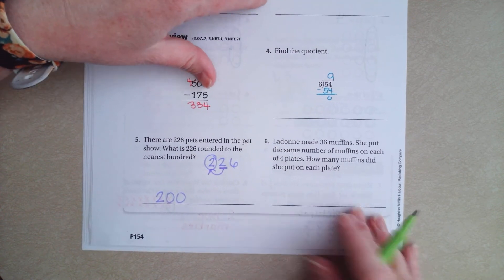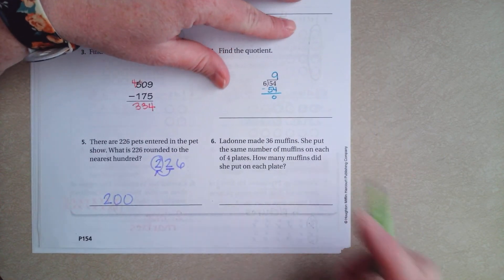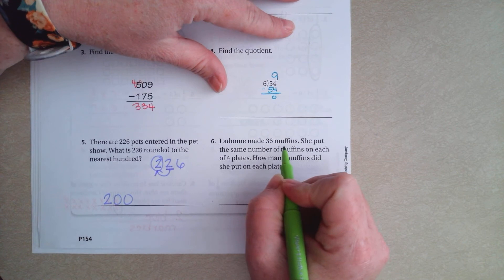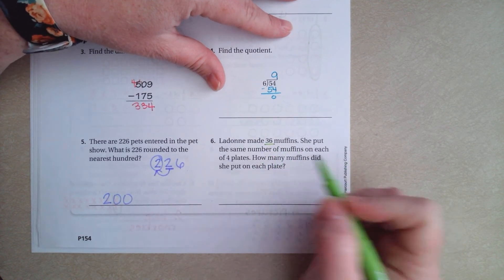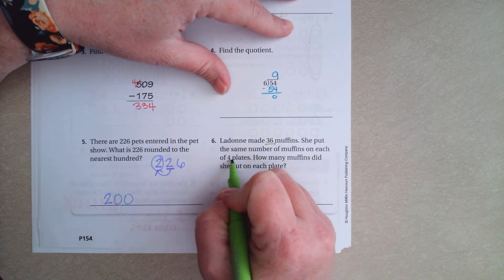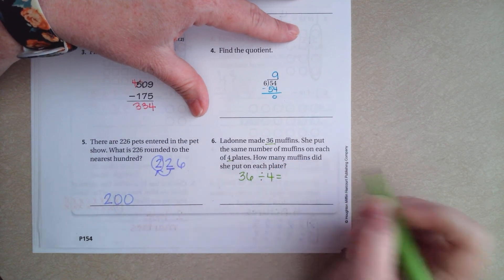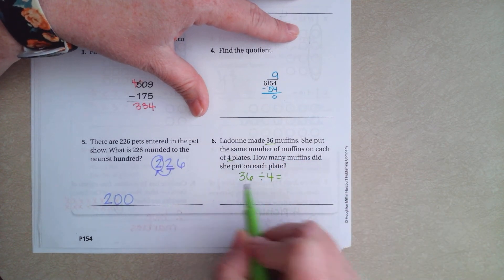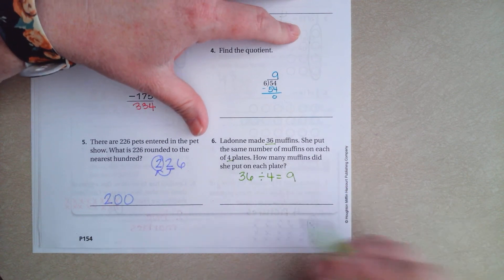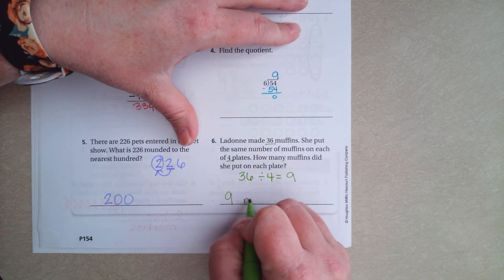LeDong made 36 muffins. She put the same number of muffins into 4 plates. 36 divided by 4. What times 4 is 36? 9 times 4 is 36. So 9 muffins.